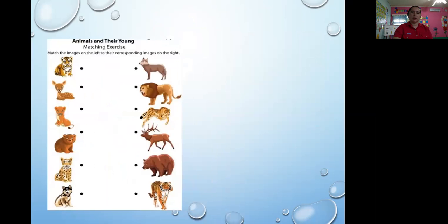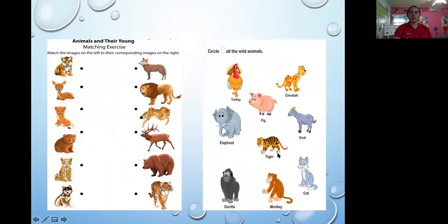Here you're going to match the image on the left to their corresponding image on the right. And here circle all the wild animals. You're going to trace a line to where the same animal corresponds, for example this one goes with this one, the little bear goes with the bear. And here you're going to circle all the animals that are wild.